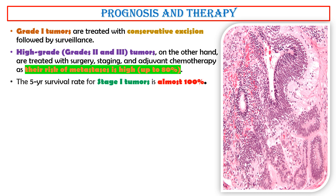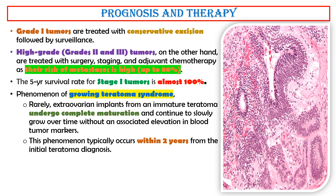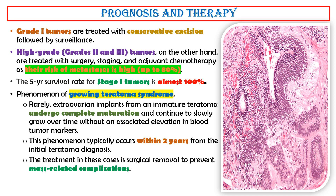Phenomenon of growing teratoma syndrome. Rarely, extra-ovarian implants of an immature teratoma undergo complete maturation and continue to slowly grow over time without an associated elevation in blood tumor markers. This phenomenon typically occurs within two years from the initial teratoma diagnosis. The treatment in these cases is surgical removal to prevent mass-related complications.